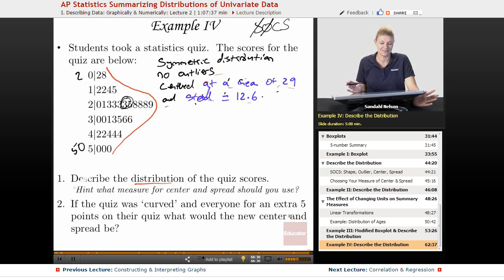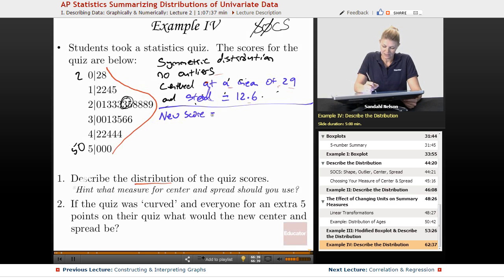Okay, so I told you we'd come back to this measure, or this changing of variables. So we have the new score, and the new score is just the old score plus 5, because everyone got an extra 5 points.